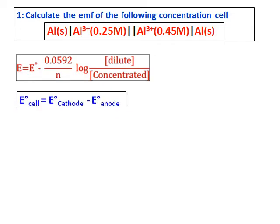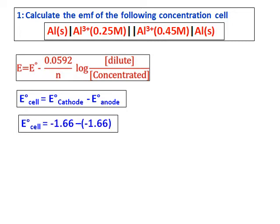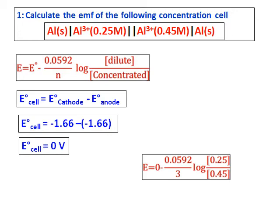Based on all these things, write down the equation and substitute all the values. In this case, E0 cell equals zero because it is the same electrode on both sides, and therefore the value of E comes as 0.005. The electromotive force from concentration cells is always very low because it is not a reduction potential difference causing the flow of electrons — it is a concentration difference that drives the electrons.